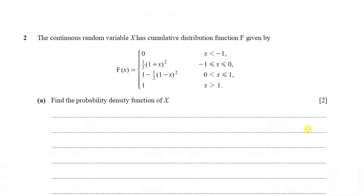On part a, find the probability density function of x. In order to find the PDF when given the cumulative distribution function, we do that by differentiating. First, I'm going to differentiate with respect to x the function one half of (1 plus x) squared.